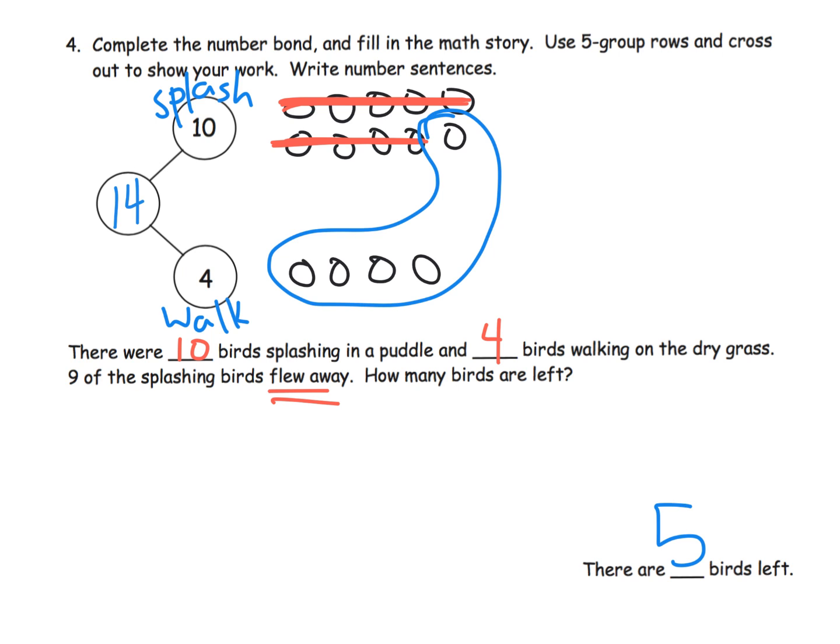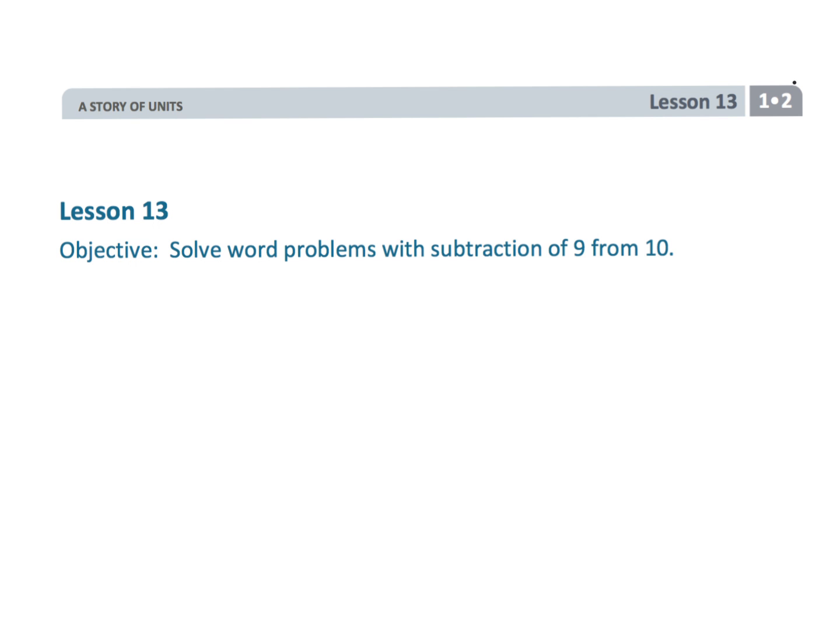Now what would our number sentence look like? Our number sentence would be 14 minus 9 equals 5. And that wraps up first grade module 2 lesson 13, continuing to use word problems to subtract 9 from 10.